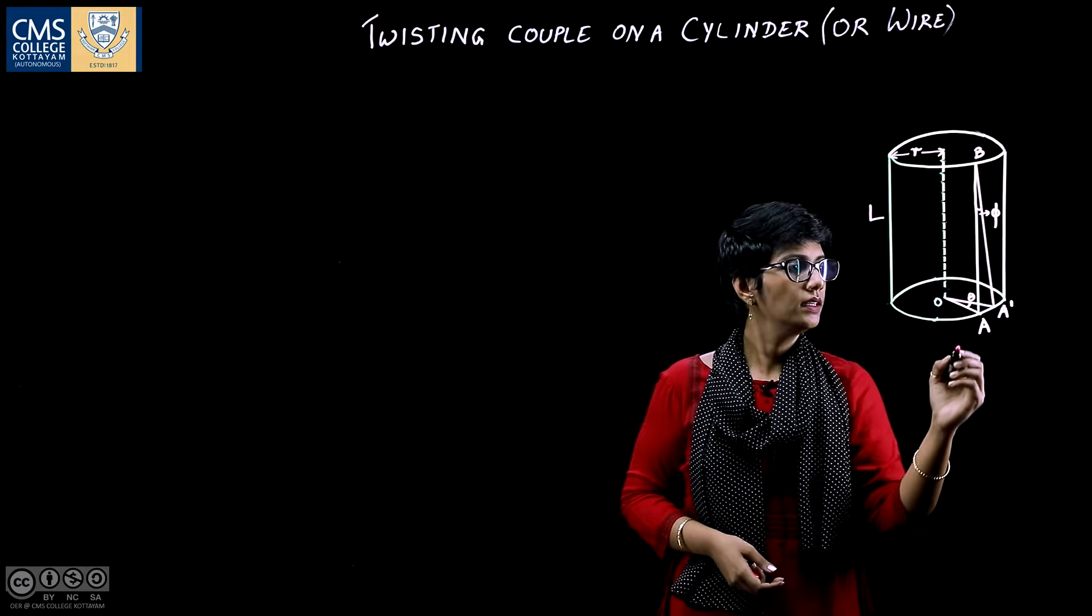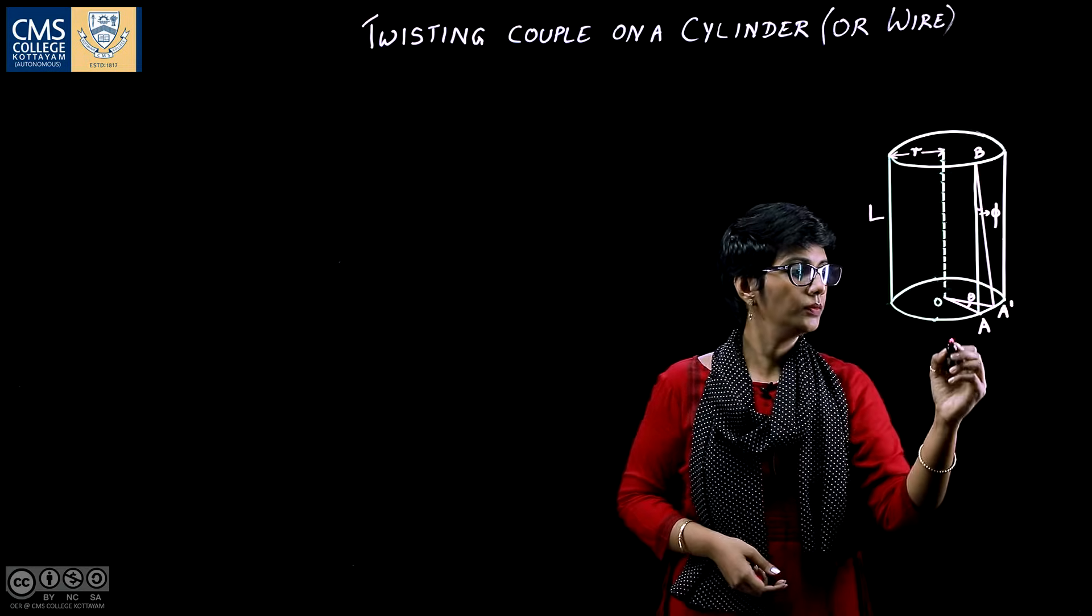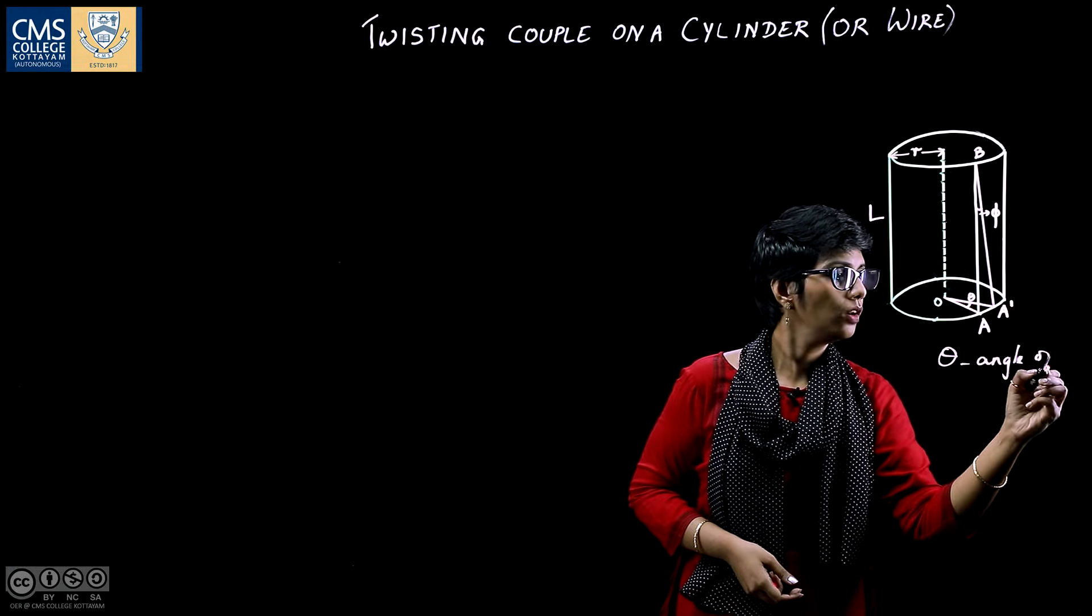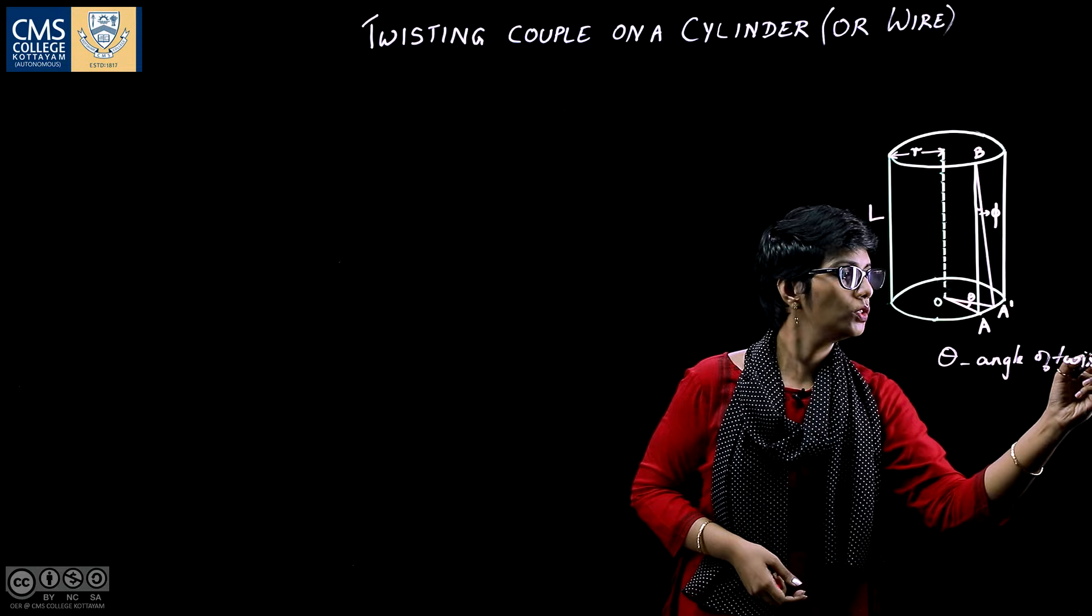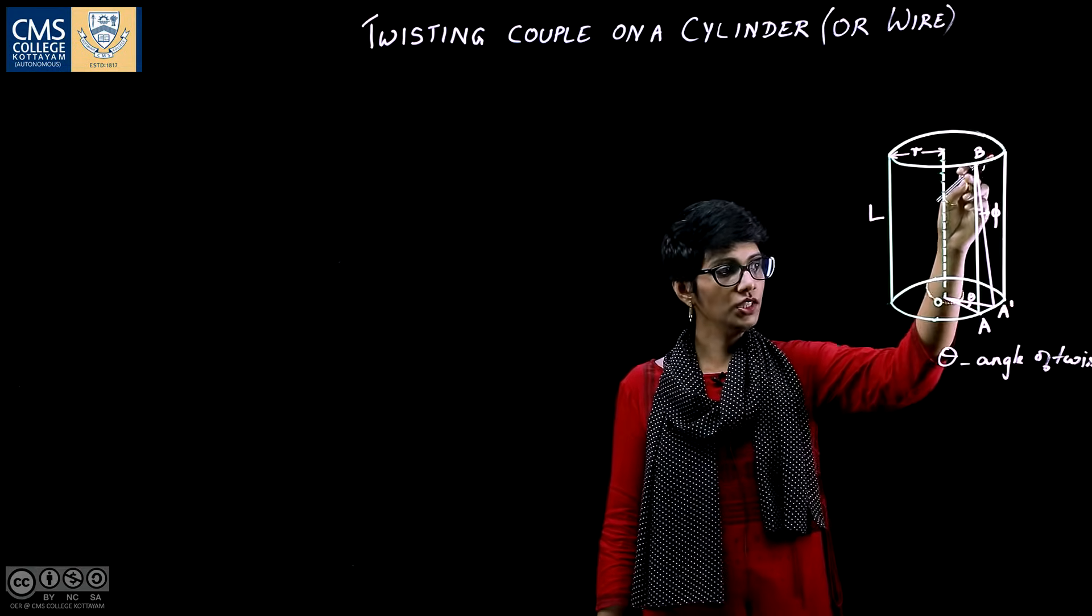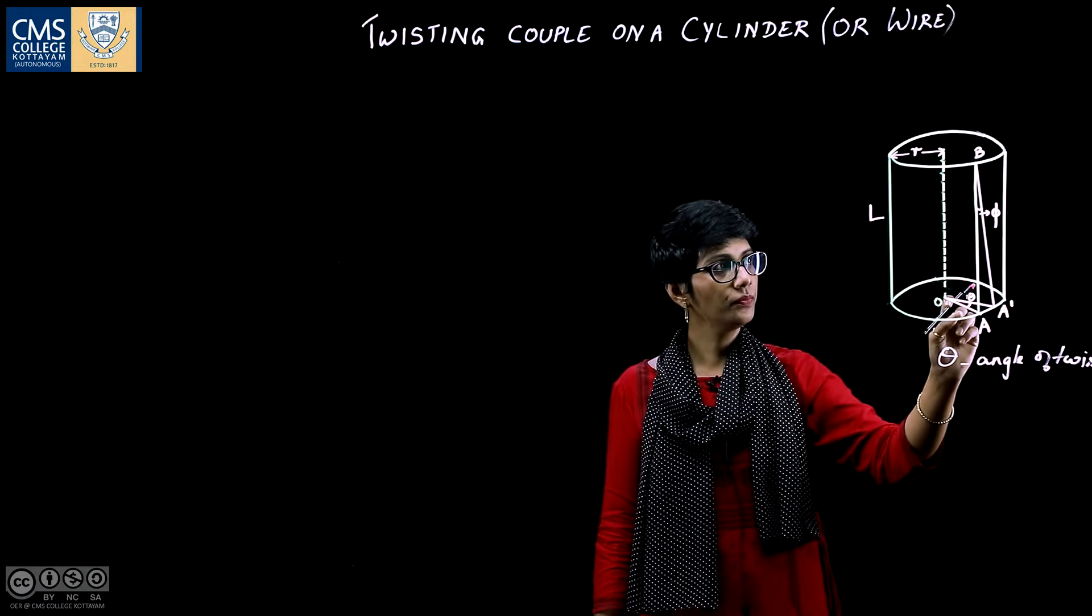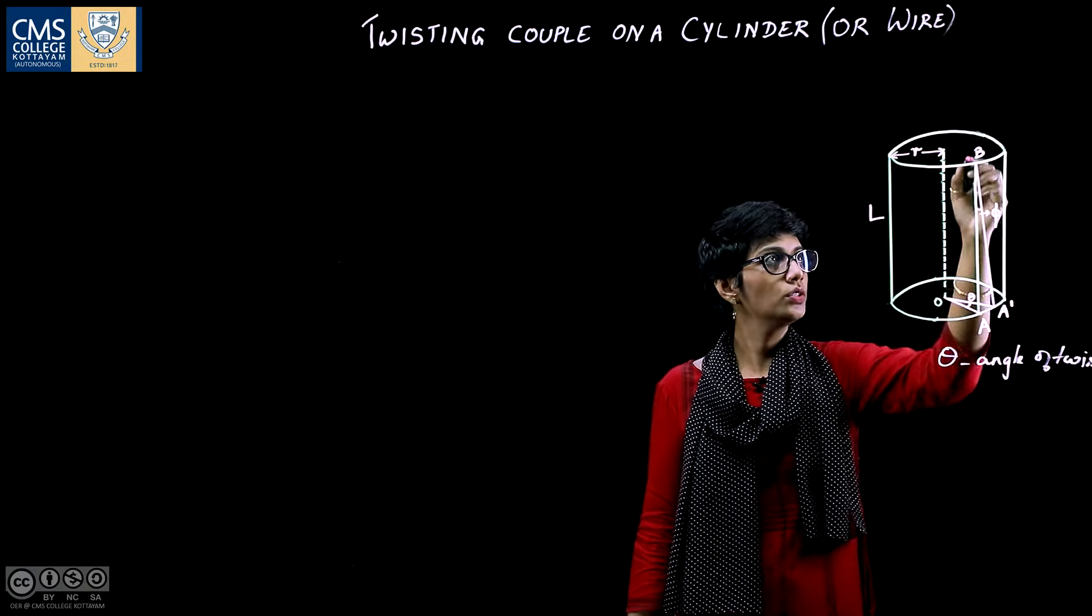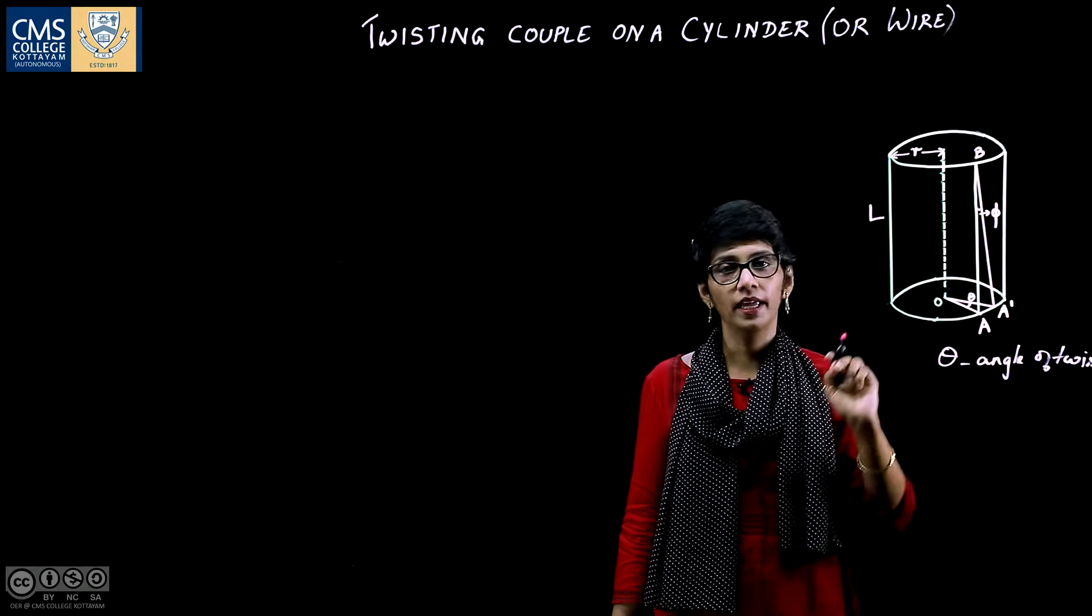So theta is the angle of twist. The longitudinal line BA sheared through an angle phi to the new position BA prime.